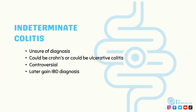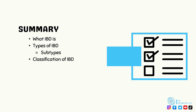Lastly, indeterminate colitis refers to cases where clinicians cannot diagnose either Crohn's disease or ulcerative colitis despite symptoms being present. In this case, a diagnosis of indeterminate colitis is given, sometimes known as IBD unclassified, which — despite being somewhat controversial — is still a distinct clinical entity. People given this diagnosis may later receive a diagnosis of either Crohn's disease or ulcerative colitis depending on the progression of their symptoms.